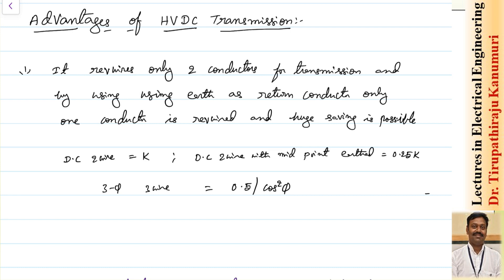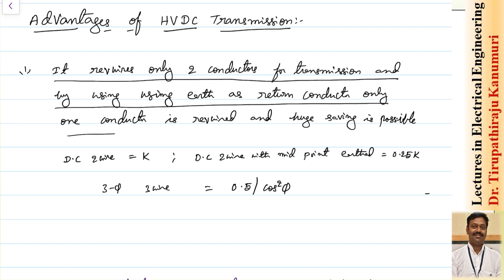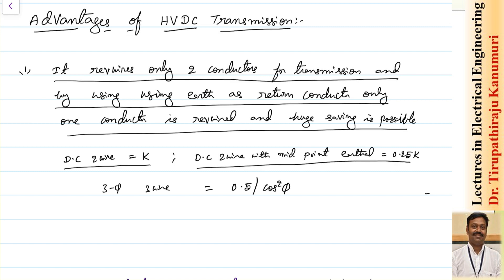Before going further, let us see the advantages and disadvantages of HVDC transmission. The advantages of HVDC are: it requires only two conductors for transmission, and by using earth as a return conductor, only one conductor is required, thereby a saving is possible. We have already studied that the DC two-wire system with midpoint earth requires only 25% of the copper of the two-wire system, when compared to the three-phase three-wire system which needs 0.5/cos²φ.